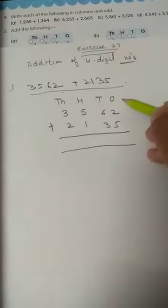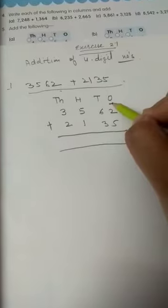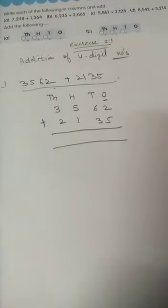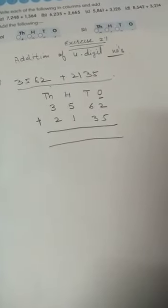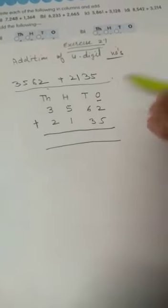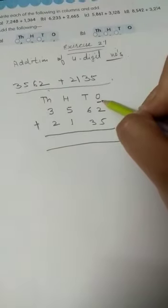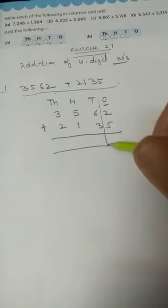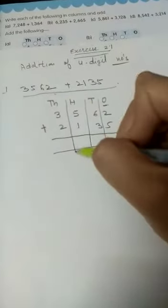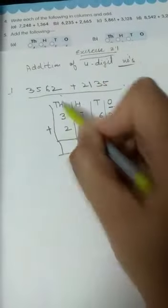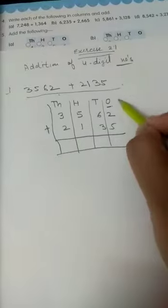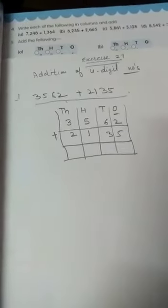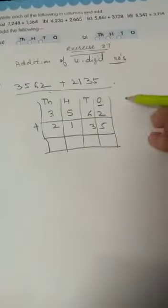Always start your addition from the right side. All the addition sums are same. Whether these are 2 digit number, 3 digit number or 4 digit number does not matter. Always start your addition from the ones place. Secondly remember that no 2 digit can be there under a single place. Under a single place only a single digit can be there. You are using your square notebooks. Squares are already there in your notebook. So write down 1 digit in 1 box only. Then start your addition.